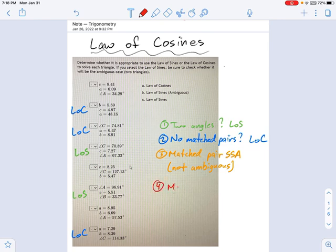Fourth category is, you have a matched pair. It's side, side, angle, and it is the dreaded ambiguous case. Okay, there's two triangles possible as a result.